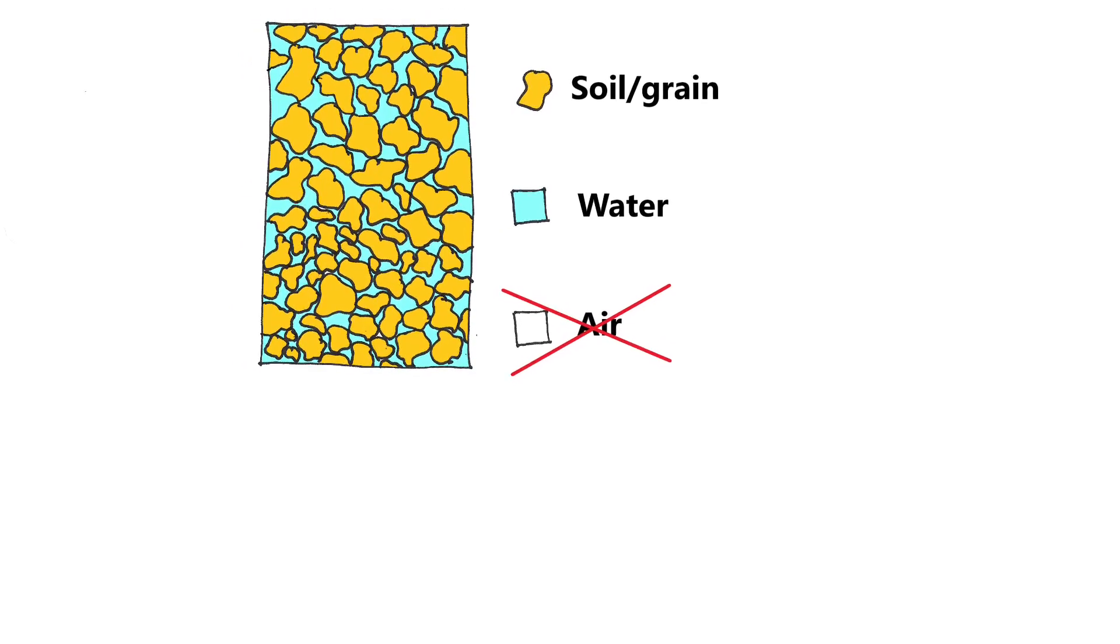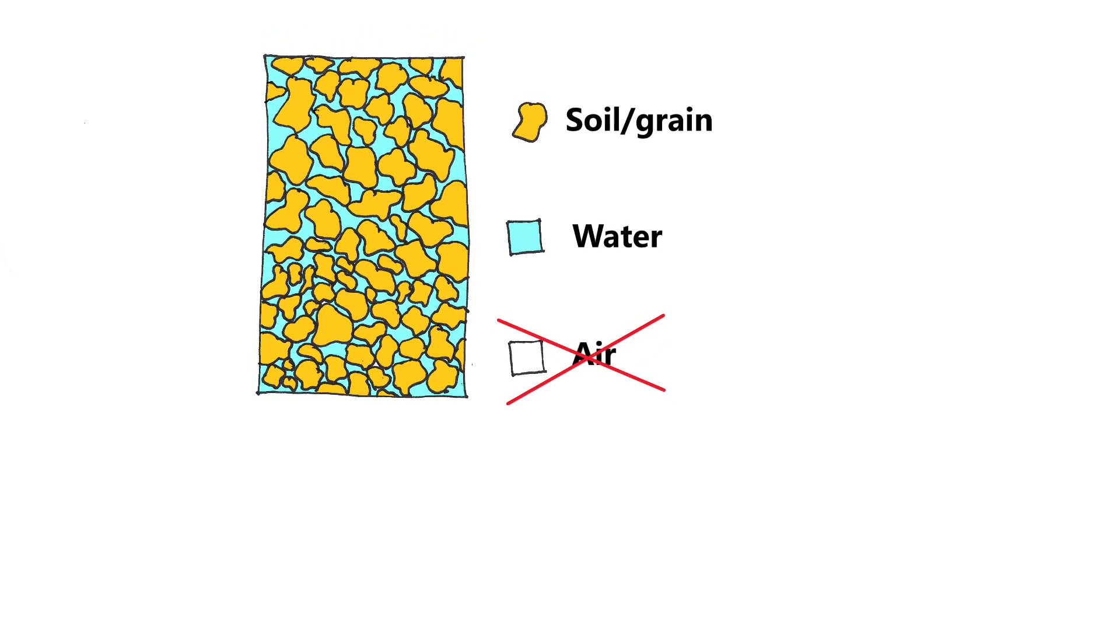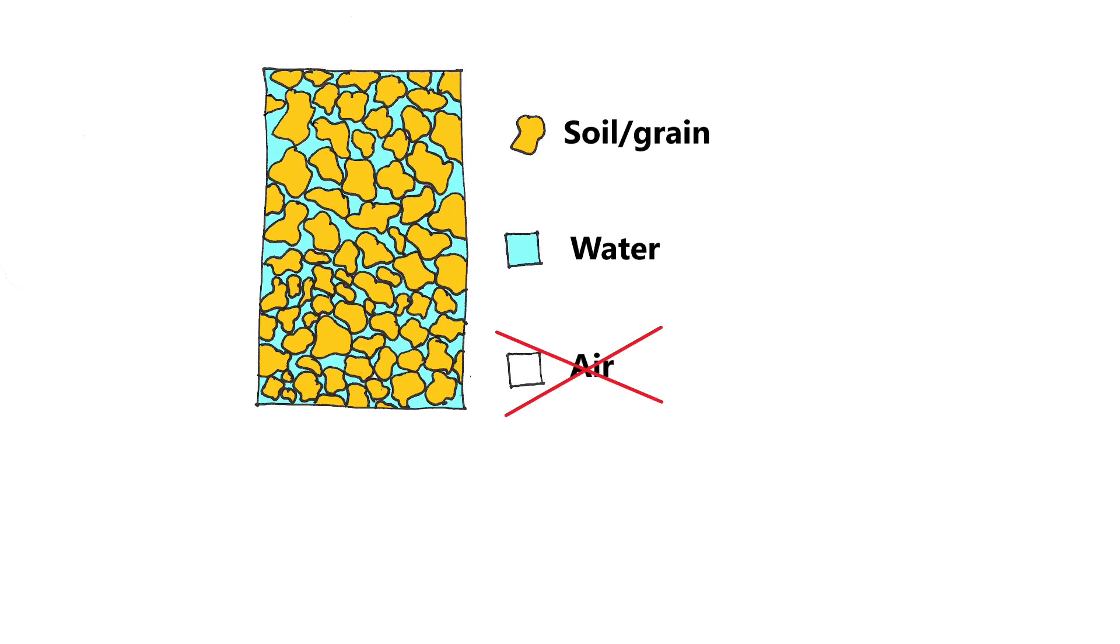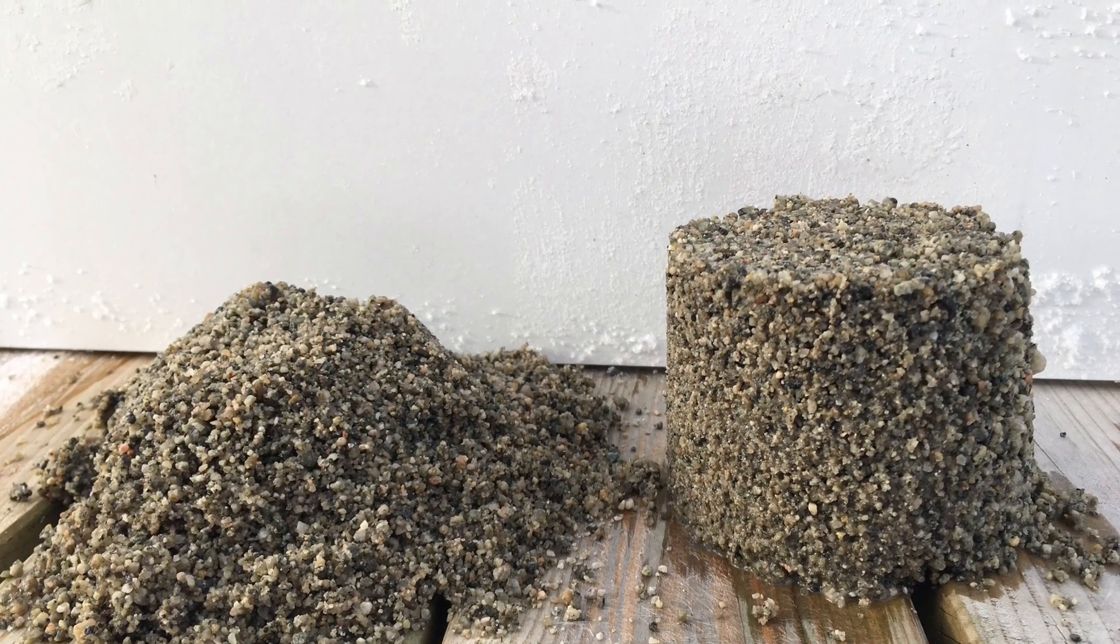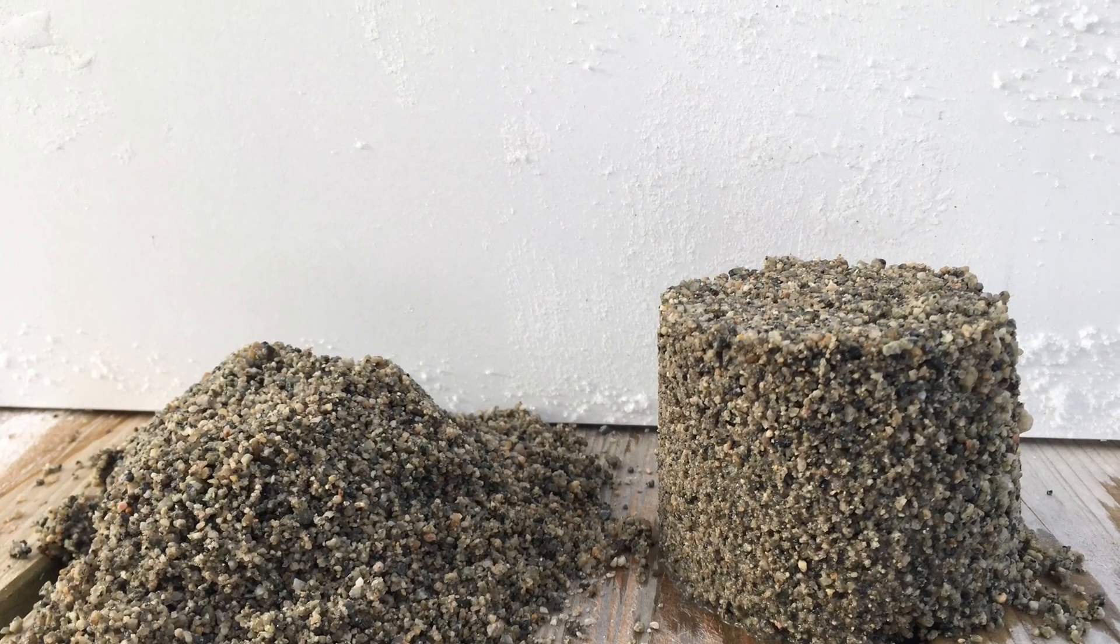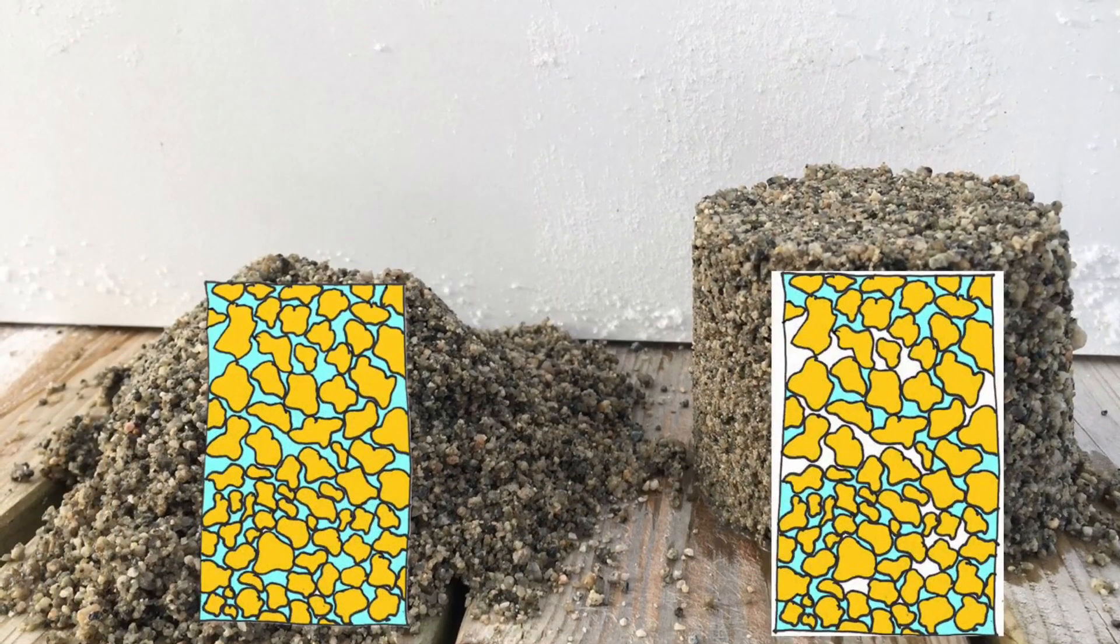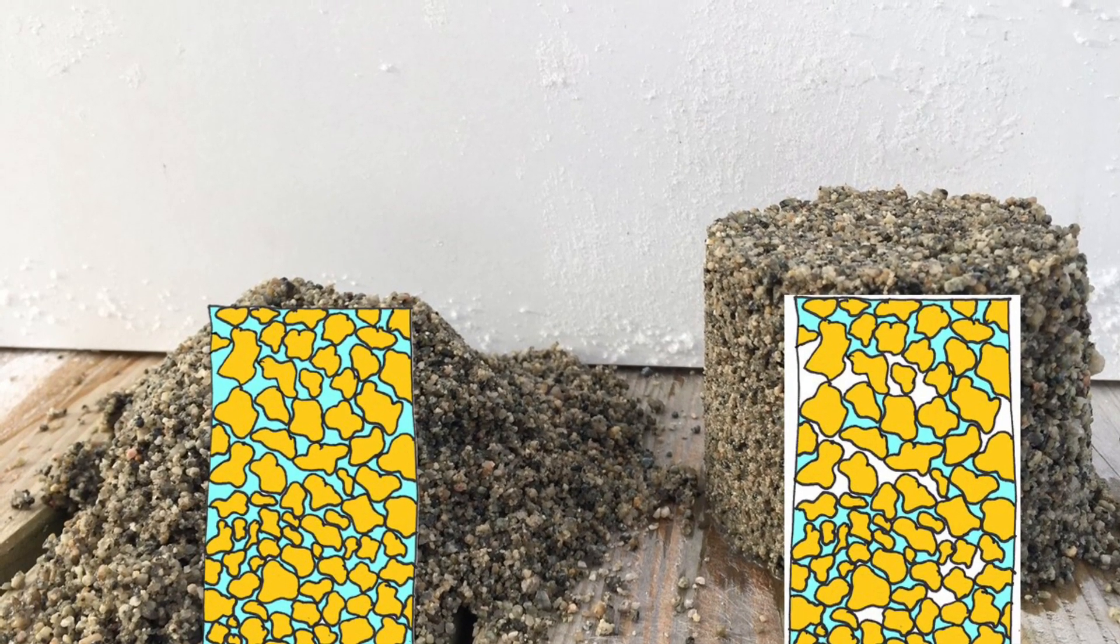Had the sand become fully saturated with water without air bubbles, then no surface tension or vacuum would be created and it would not be possible to build a sand castle. This is seen in the picture where fully saturated sand will flow and the moist sand can stand and you can build a sand castle.